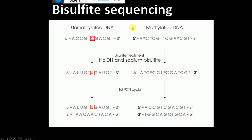This is how we distinguish where methylation has occurred: in the case of unmethylated cytosine it is converted into uracil, whereas methylated cytosine remains the same even after sodium hydroxide and sodium bisulfite treatment. This is bisulfite sequencing, one method to detect DNA methylation.